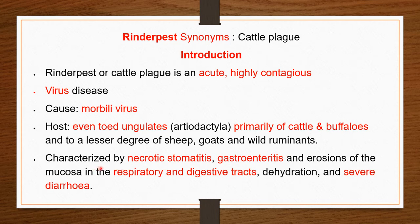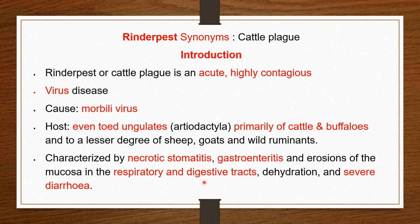The disease is characterized by severe necrotic stomatitis. It causes necrosis of the epithelium and inflammation of the buccal mucous membrane. Not only this, but it causes inflammation of the intestine, gastroenteritis, and erosion of the mucosa of the respiratory and digestive tract.